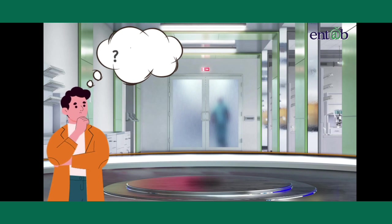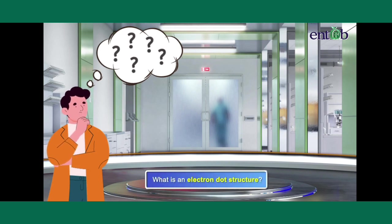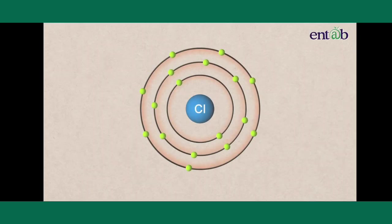Before we learn how metals and non-metals combine to form ionic compounds, let us learn what is an electron dot structure. Generally, only the electrons present in the outermost orbit or shell participate in a chemical reaction.